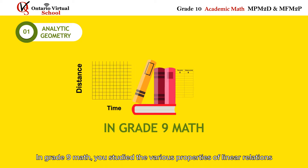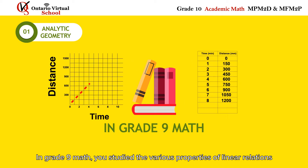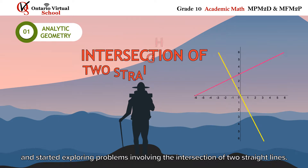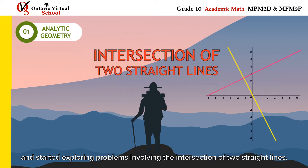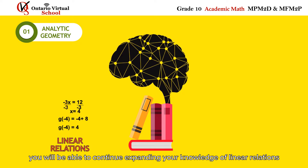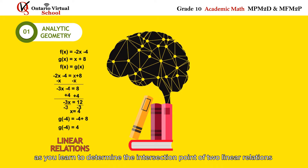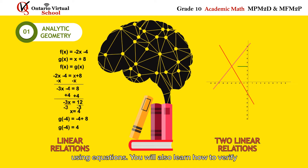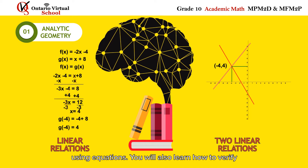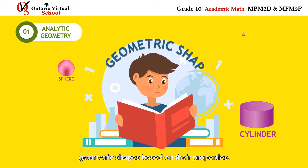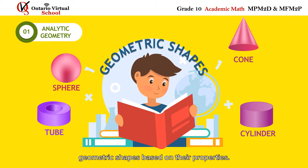In Grade 9 math, you studied the various properties of linear relations and started exploring problems involving the intersection of two straight lines. In this unit, you will continue expanding your knowledge of linear relations as you learn to determine the intersection point of two linear relations using equations. You will also learn how to verify geometric shapes based on their properties.